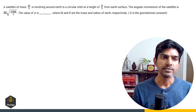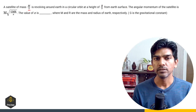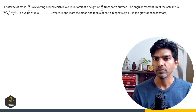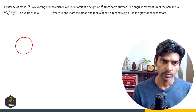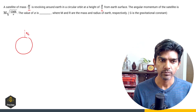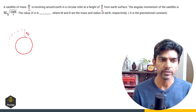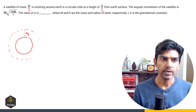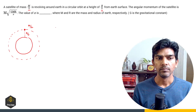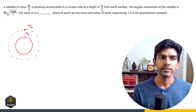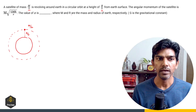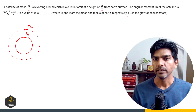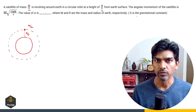Now the next question. A satellite of mass M/2 is revolving around earth in a circular orbit at a height of R/3 from the earth surface. The angular momentum of the satellite is M times root of GmR divided by X. We have to find the value of X, where capital M is the mass of the earth, R is the radius of the earth, and G is the gravitational constant.